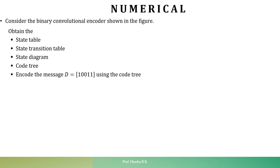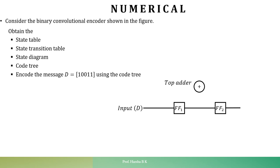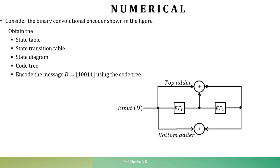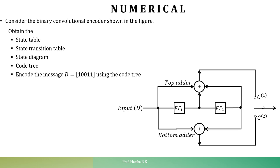The given encoder is structured as follows: the input D is fed as the message input for a flip-flop designated as FF1. The output from FF1 is connected to another flip-flop called FF2, and the output from FF2 is generated. There is a top adder and a bottom adder. The output from the top adder is called C1, and the output from the bottom adder is designated as C2. The outputs are continuously taken from C1 and C2 to obtain the encoded sequence C.